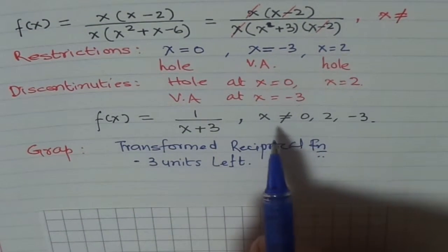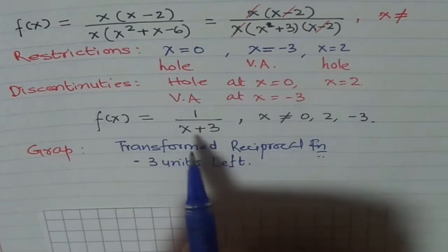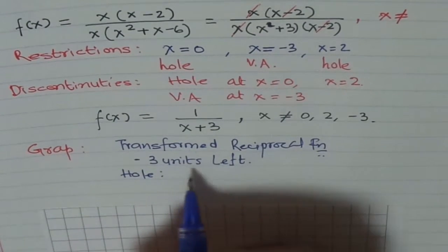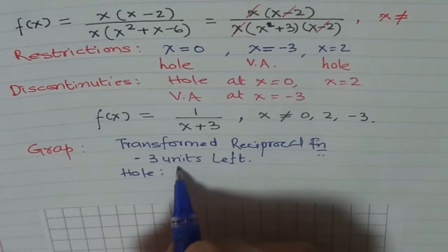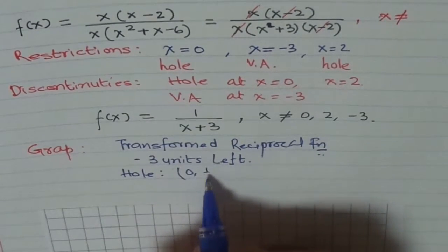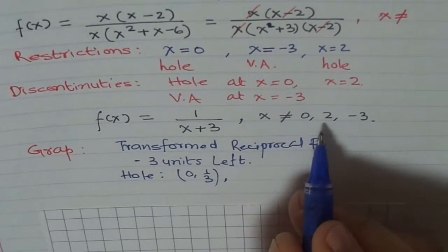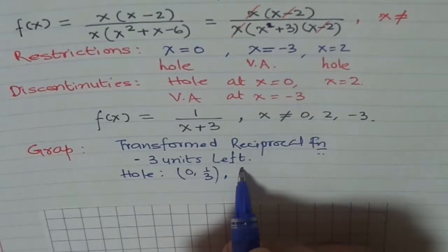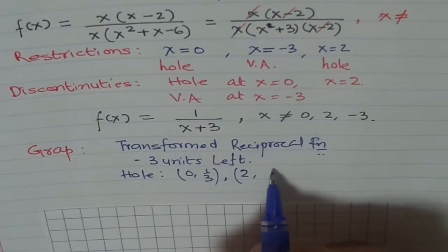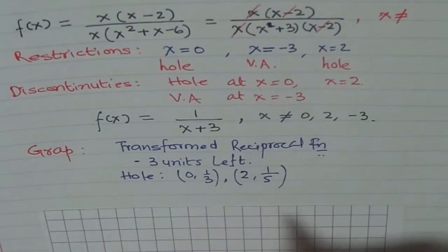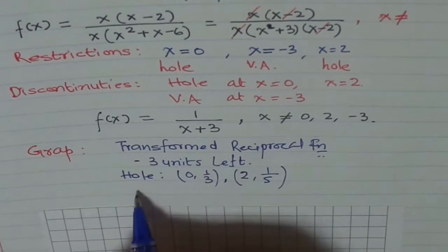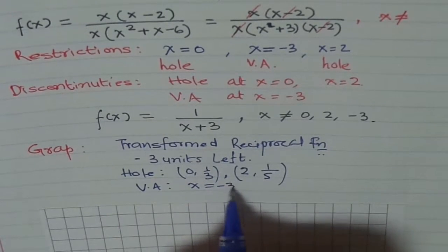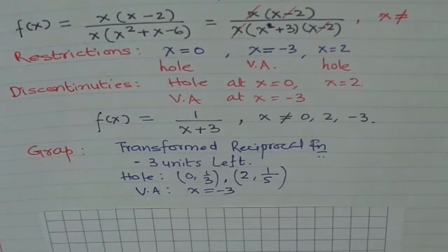Now, let's find the precise positions of the holes. Hole at x equals 0: if I plug in 0, I get 1 over 3. So that is one position of the hole — at (0, 1/3). The second hole is at x equals 2: plugging in 2 gives 1 over (2 plus 3), which is 1 over 5. So these are our holes, and we also have a vertical asymptote at x equals minus 3.